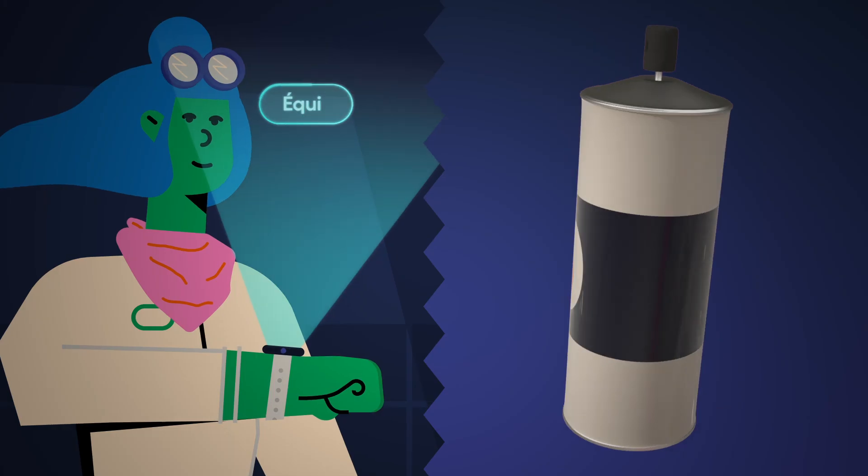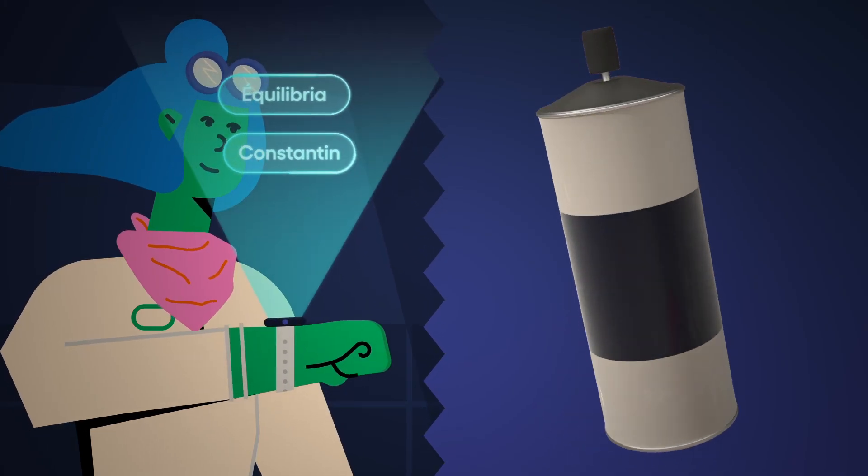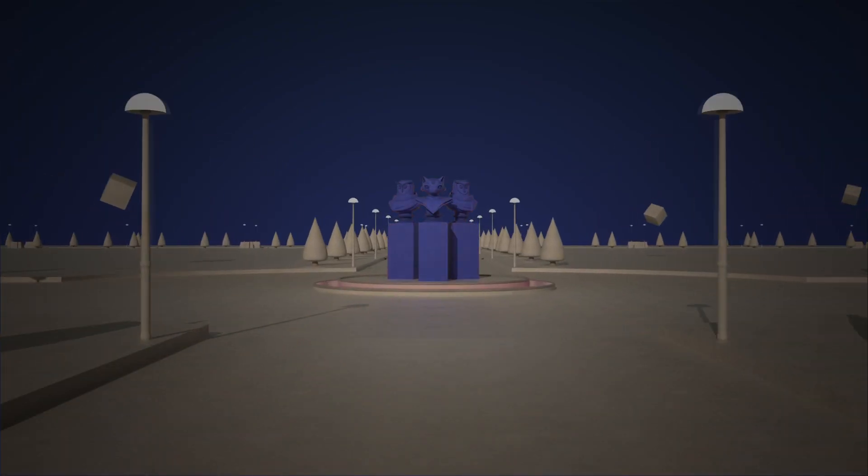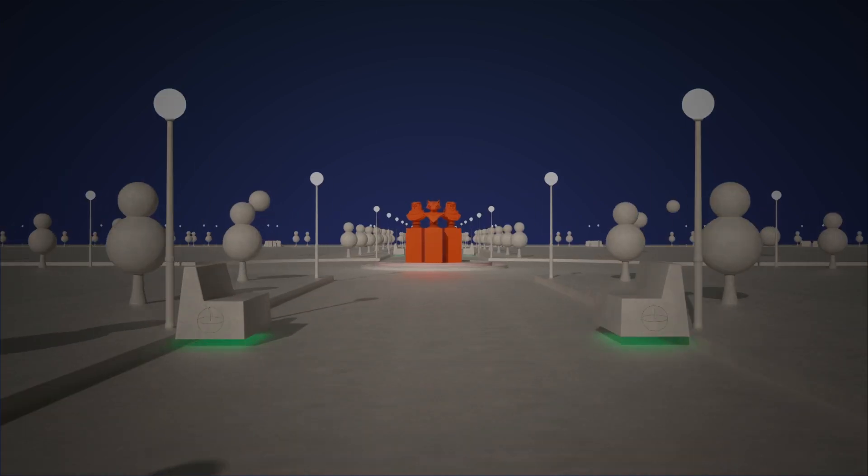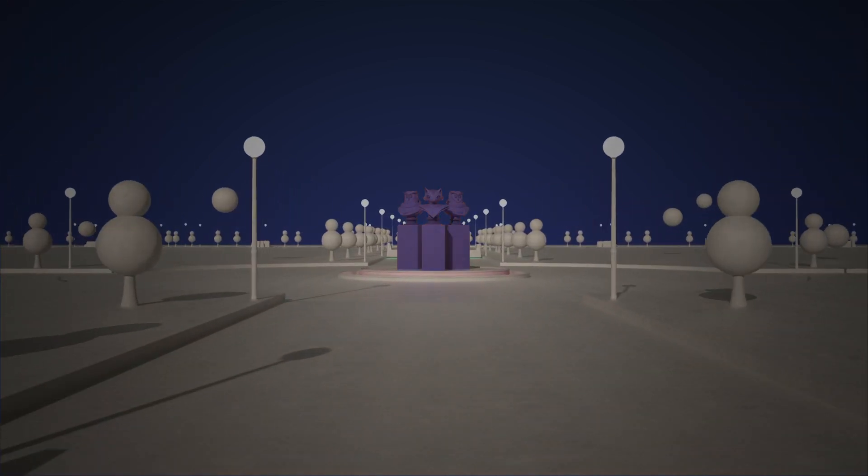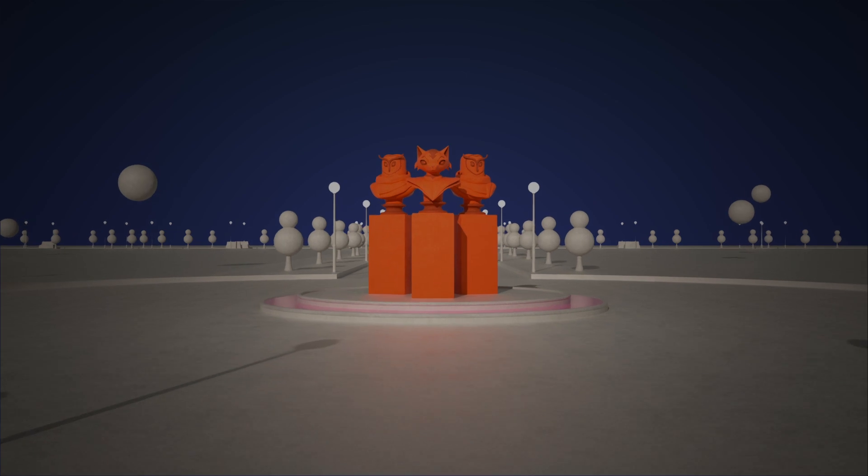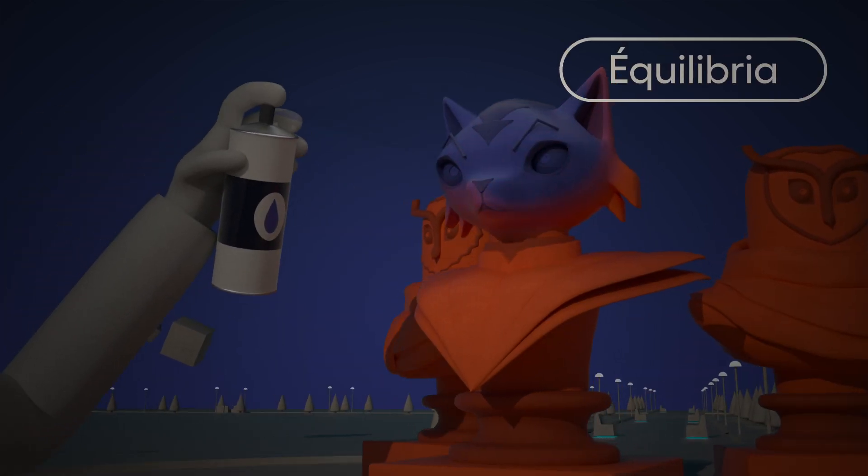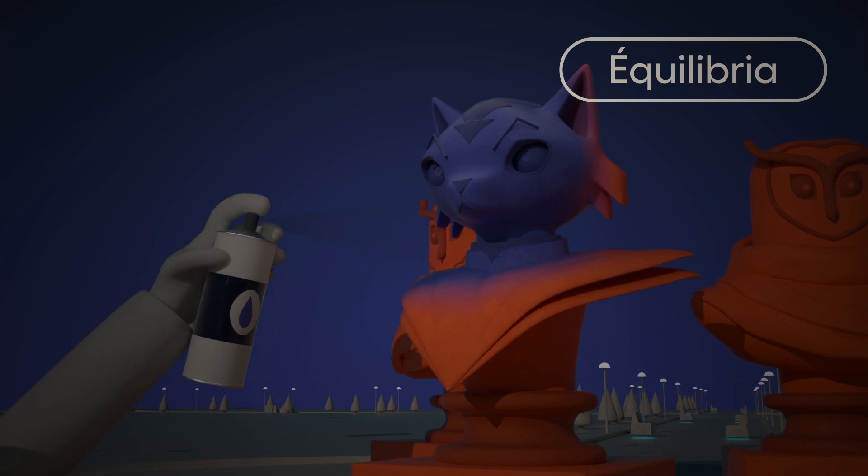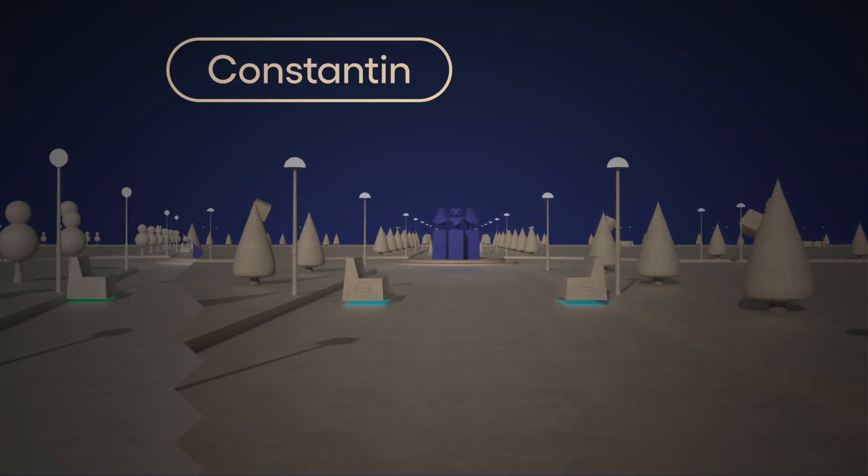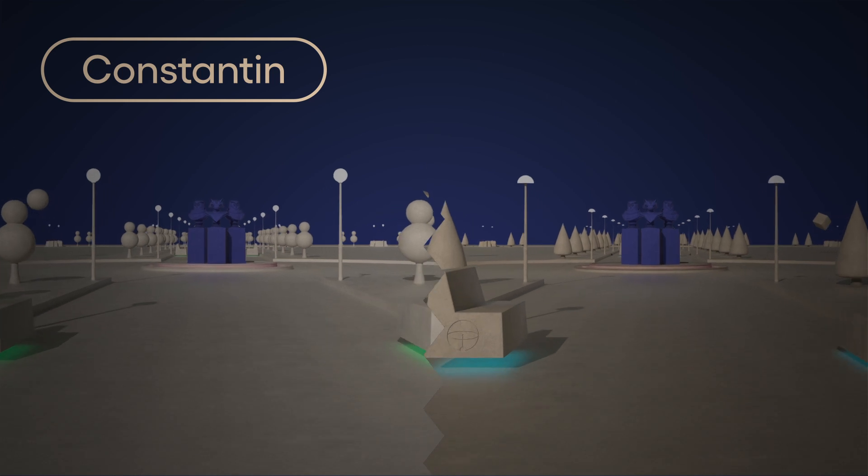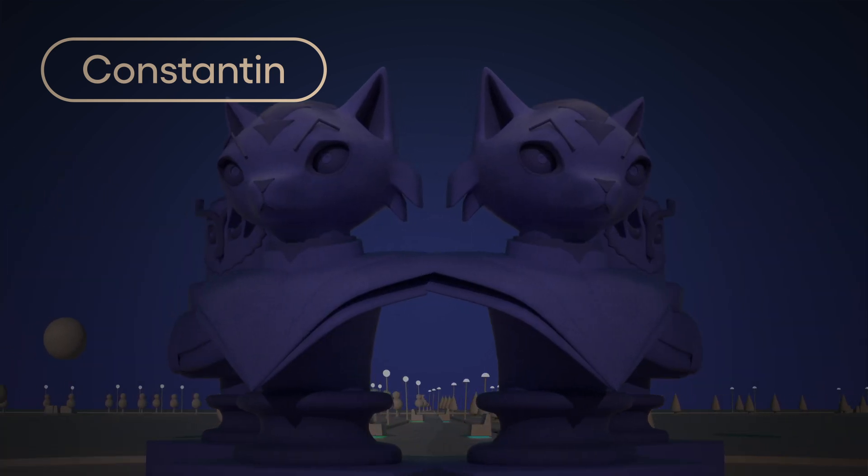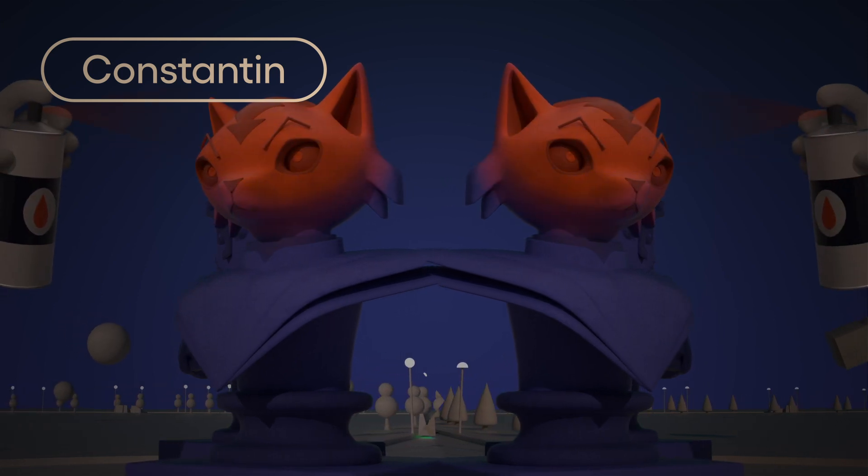Votre approche doit prendre en compte le modus operandi des vandales. À chaque nuit, Equilibria et Constantin se concertent pour déterminer qui modifiera la couleur des statues. Quand Equilibria sévit, elle repeint la statue d'un des deux parcs dans sa couleur opposée. Constantin, lui, procrastine ou aime le dur labeur. Soit il s'abstient et ne repeint aucune statue, soit il repeint les deux statues dans leur couleur opposée.